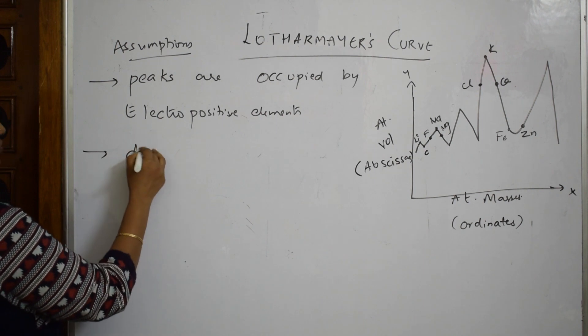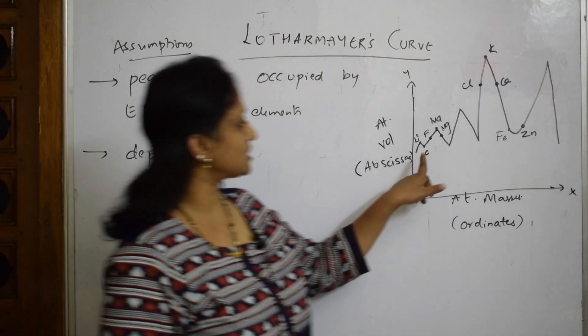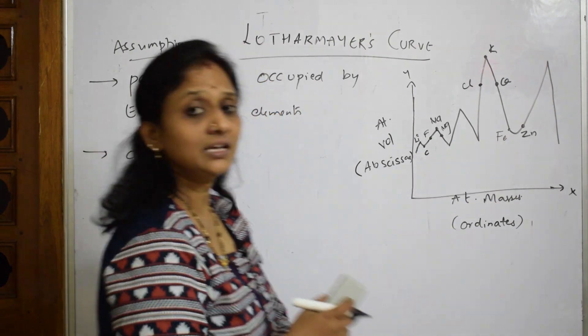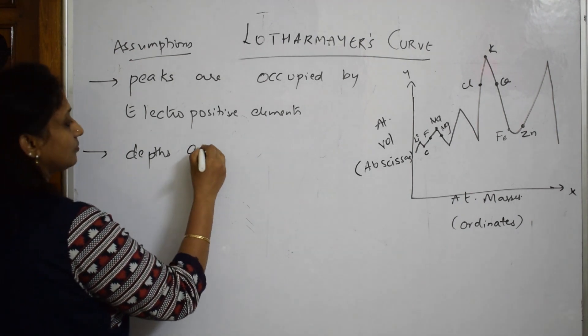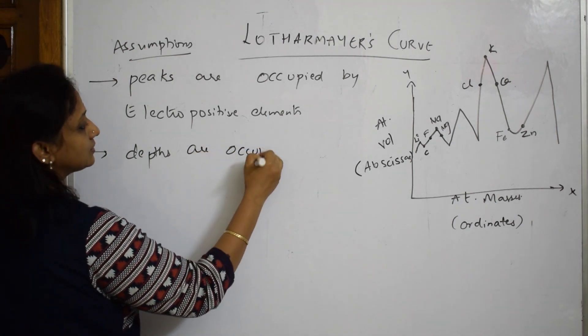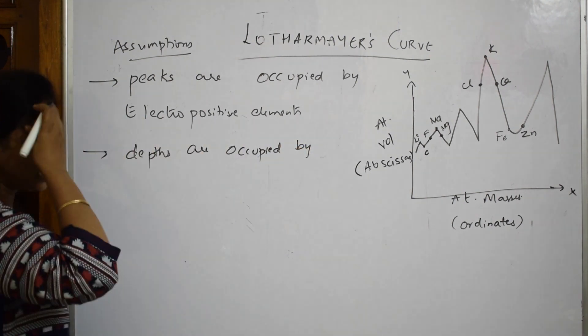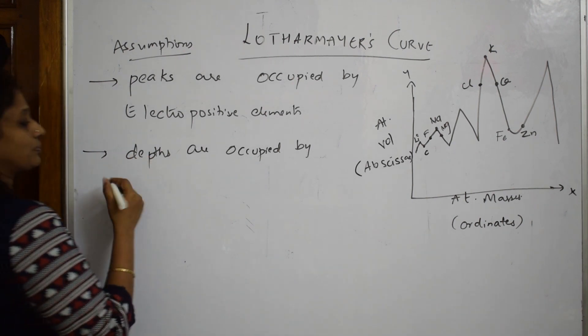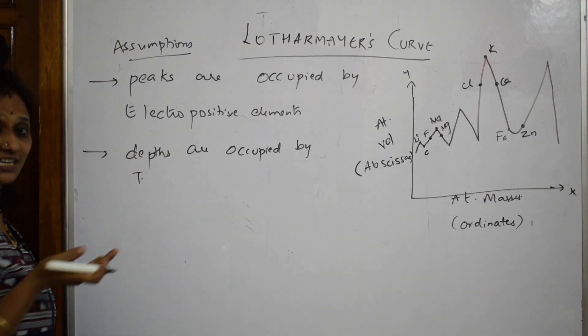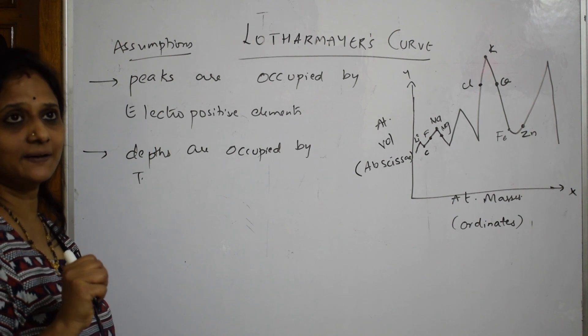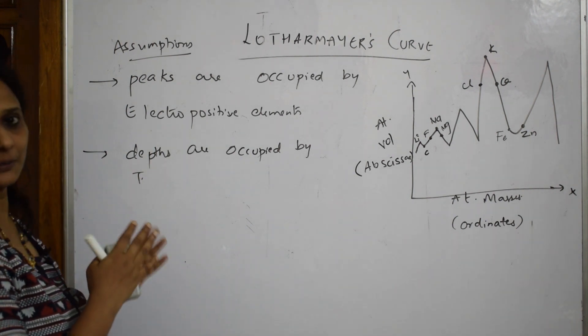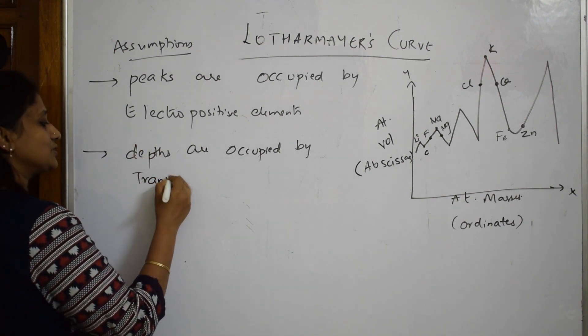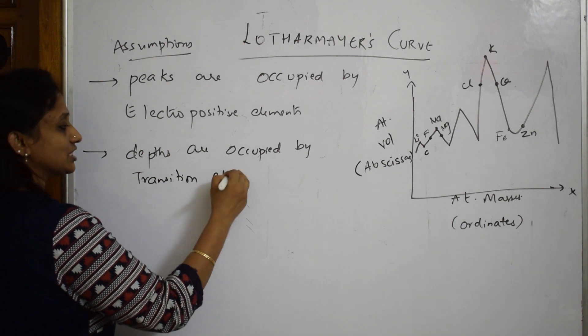Then, he said, the depths, whatever are there. Depths, what are the depths? Depths are here, this carbon, depth is here zinc, then iron. He said, the depths are occupied by, if I have to say, iron, zinc, all these are transition elements which we are speaking. Let us write, are occupied by, means if I should not say transition elements here. When I compare electropositive elements, the metal part, then transition elements, the inner core materials, element. We will write that because I want you to be clear, transition elements.